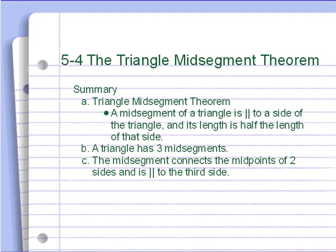And that is it. So in summary, our triangle midsegment theorem says the midsegment of a triangle is parallel to a side of the triangle and its length is half the length of that side that it's parallel to. A triangle has three midsegments, and the midsegment connects the midpoints of two sides and is parallel to the third side. Alright, bring your questions in, and we'll see you next time.